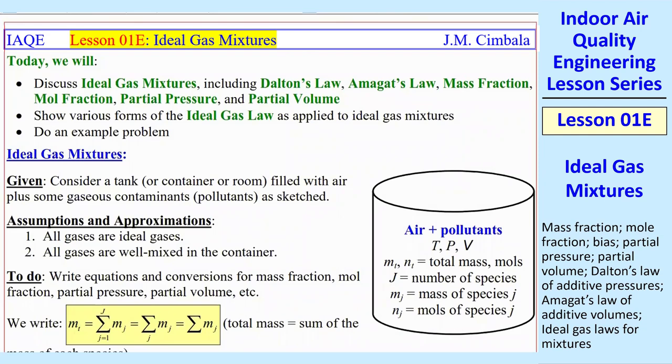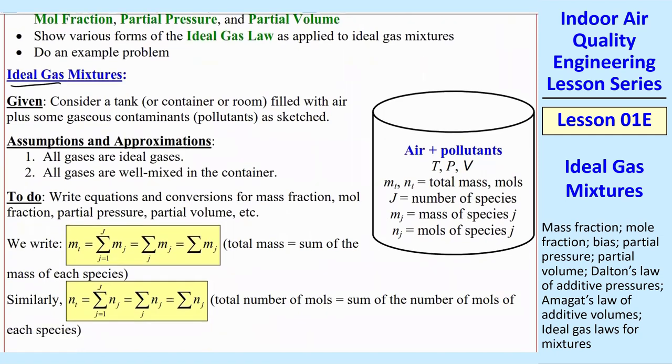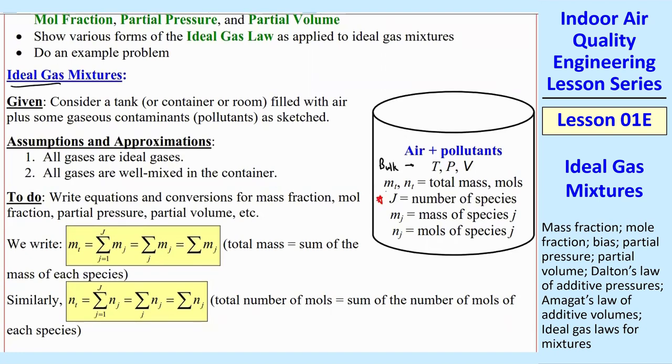Let's consider an ideal gas mixture, where we have a tank, as I show here with various species in them, air plus some pollutants. These are all gases, in fact we'll assume they're all ideal gases, which makes our algebra easier. And in this class we'll consider only ideal gases. We have a given temperature and pressure and volume, that's the bulk properties of this tank or container, and then it has J, capital J, number of species, and then each of those has a subscript little j. So if you have three gases, you would have J equal 1, 2, and 3.